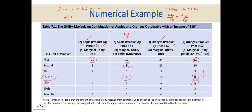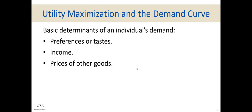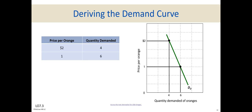Now that we understand utility maximization, we can see why the demand curve slopes downward. As prices change, people adjust how much they buy. When the price of a good drops, the MU/P ratio rises, so people buy more to restore equilibrium. For example, at an orange price of $2 we buy 4 oranges, but if the price drops to $1 we buy 6. That's how the demand curve and demand schedule are derived.